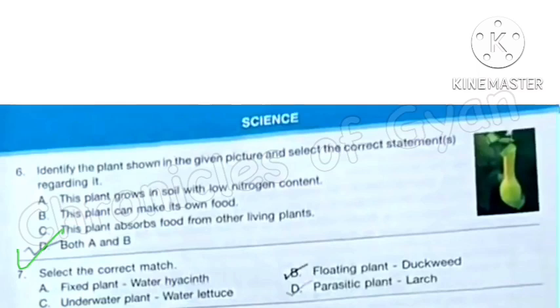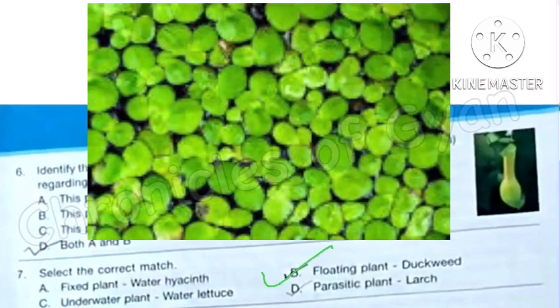Question 7: Select the correct match. Option A: Water hyacinth is a free floating plant. Option B: Duckweed. Yes, this is correct option as it is a free floating plant. Option C: Water lettuce is also a free floating plant, so this option is also incorrect. Here the only correct match is option B floating plant, that is duckweed.